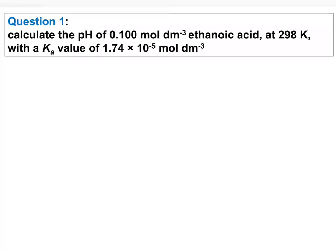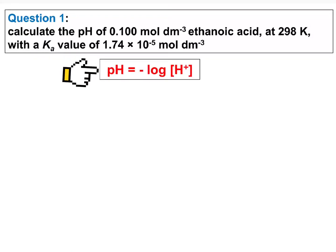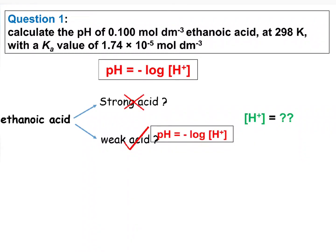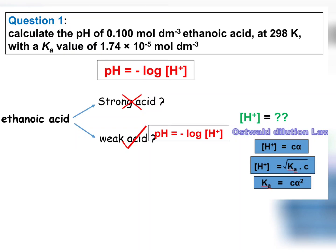Now let's go to the questions. For question 1, we need to calculate the pH value of ethanoic acid. To determine the pH value of the acid, we use these equations. Always bear in mind that for a weak acid, we cannot use the pH formula directly, but we need to use certain equations to determine the concentration of hydrogen ions first. Therefore, we need to use the equations from Ostwald's dilution law to determine the concentration of hydrogen ions first.